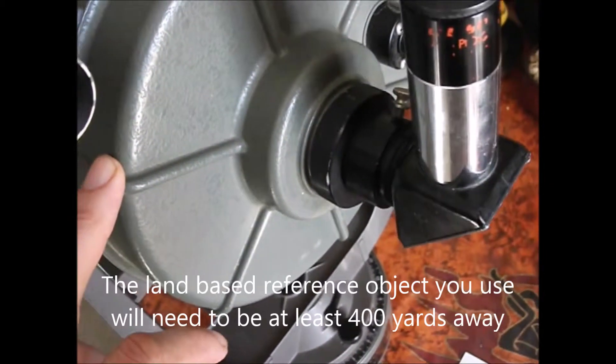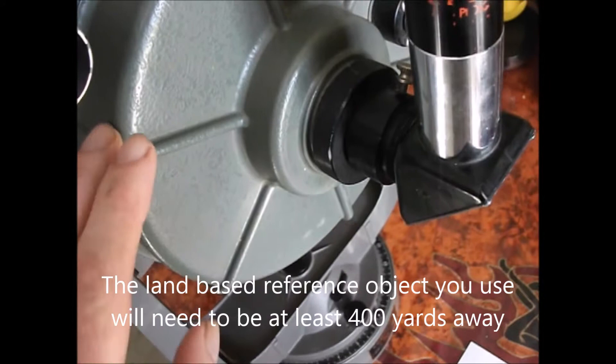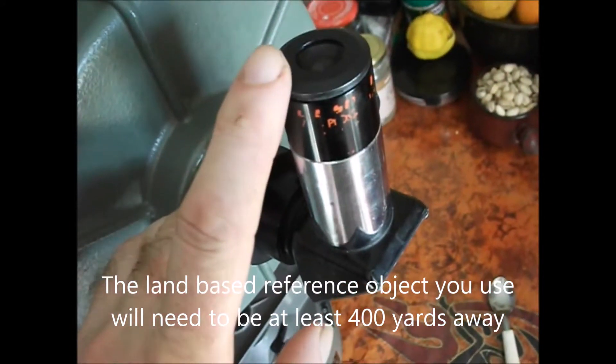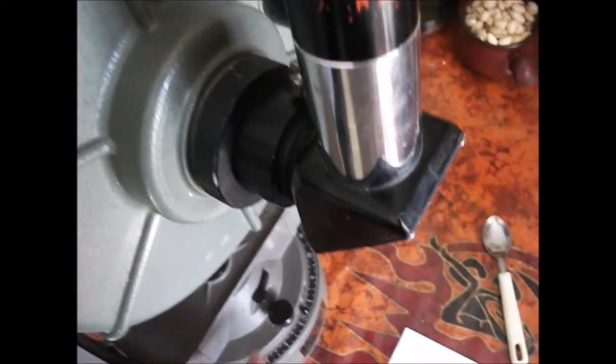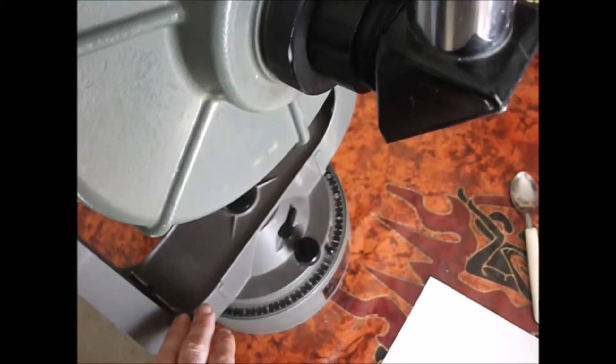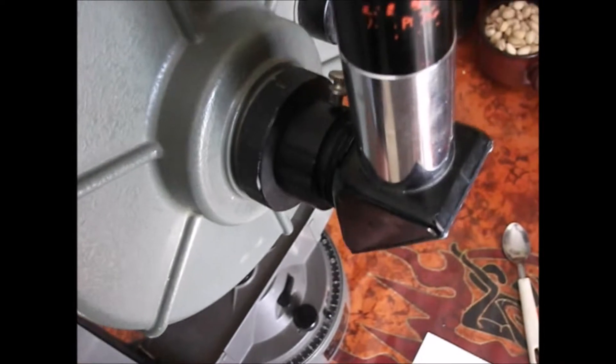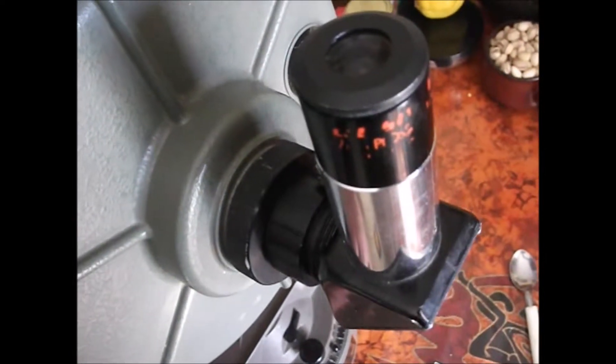And you want to line that up on the main telescope. So simply look through the viewfinder, find a land-based object in the distance, and then using the RA and declination controls, pick a very accurate reference point and center it exactly in the middle of the viewfinder.